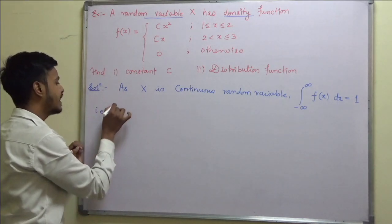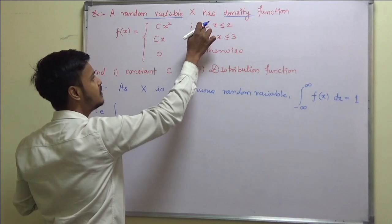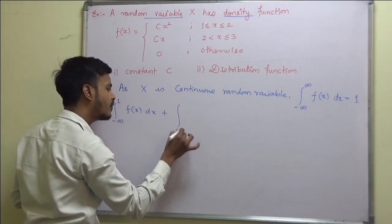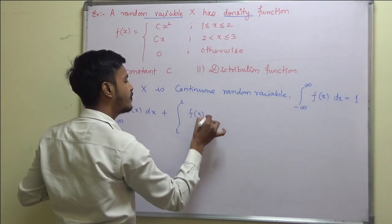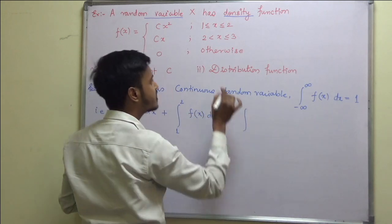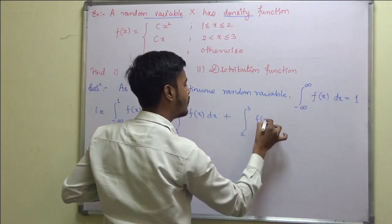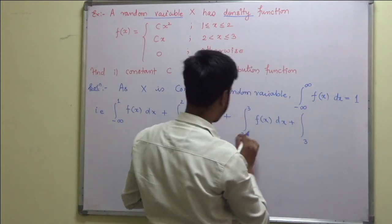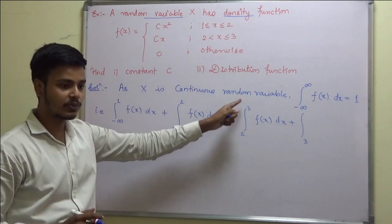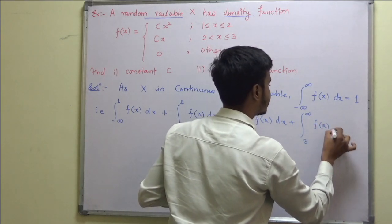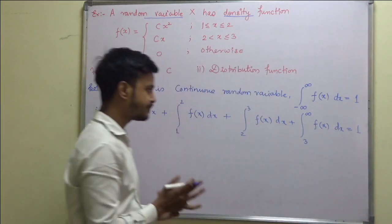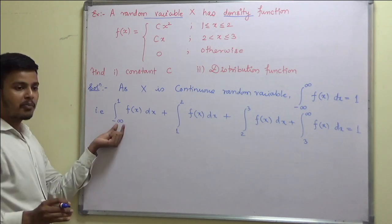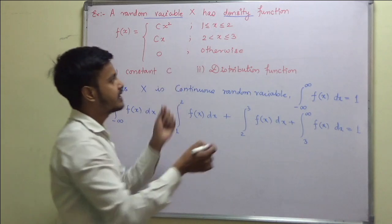So I am writing: integration from minus infinity to 1, f(x) dx, plus integration from 1 to 2, f(x) dx, plus integration from 2 to 3, f(x) dx, plus integration from 3 to infinity, f(x) dx, is equal to 1. Now, if you look at this — from minus infinity to 1 we do not have any value.